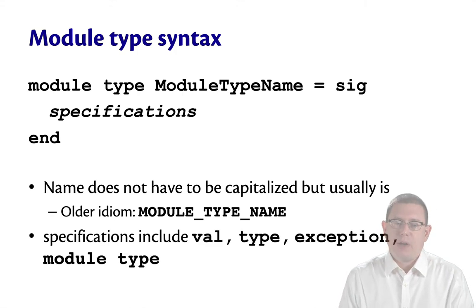The specifications that are part of a module type can include values, as we've seen so far. You can specify types, exceptions, and you can even nest other module types in them as well.